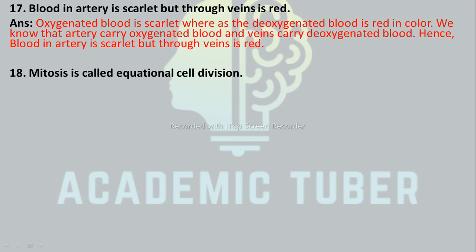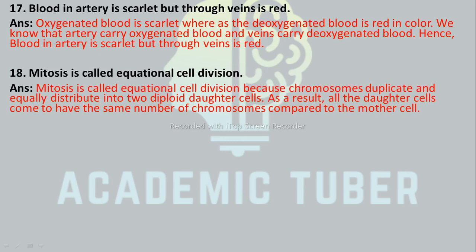Mitosis is called equational cell division. Why? Mitosis is called equational cell division because chromosomes duplicate and equally distribute into two diploid daughter cells. As a result, all daughter cells have the same number of chromosomes as the mother cell.